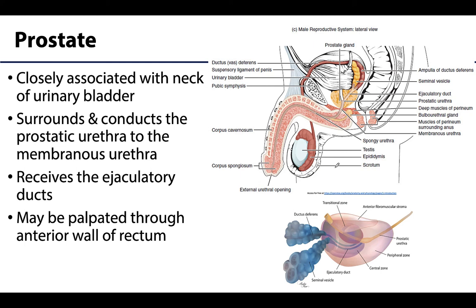The prostate is closely associated with the neck of the bladder. Often described as about the size of a walnut, the prostate surrounds the prostatic urethra. The prostatic urethra receives the contents of the ejaculatory ducts, and prostatic fluid opens into the prostatic urethra via multiple sinuses on either side of the seminal colliculus. Also notable is the prostate's close proximity to the anterior wall of the rectum, which allows the prostate to be palpated through the rectum to get an indication of disease or hypertrophy.